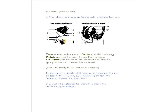The next question says: which structures in males and females have similar functions? The testes produce sperm and the ovaries produce eggs, so they've got a similar function. We would label the testes and the ovaries. The oviducts are tubes that carry eggs from the ovaries — there'd be a tube carrying the eggs, and this is the oviduct. The tube that carries the sperm is called the vas deferens, so you can see how those two have kind of similar functions.